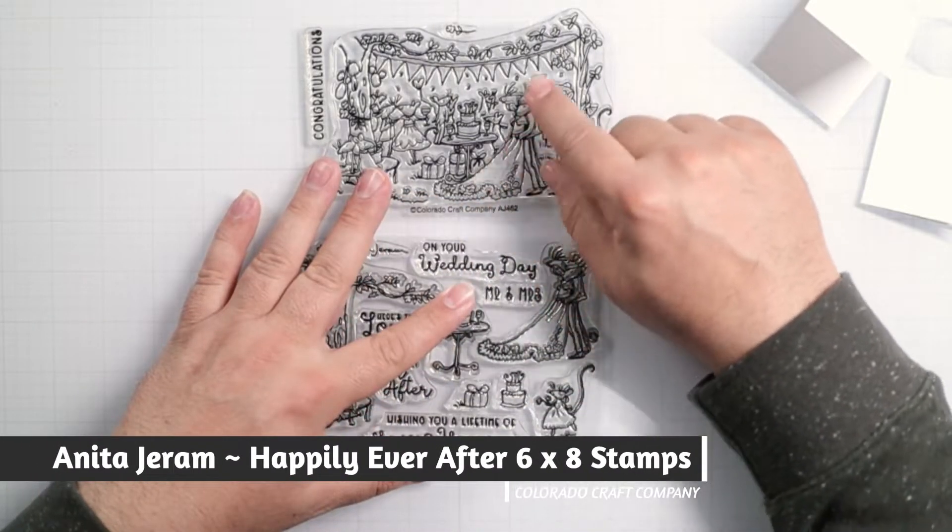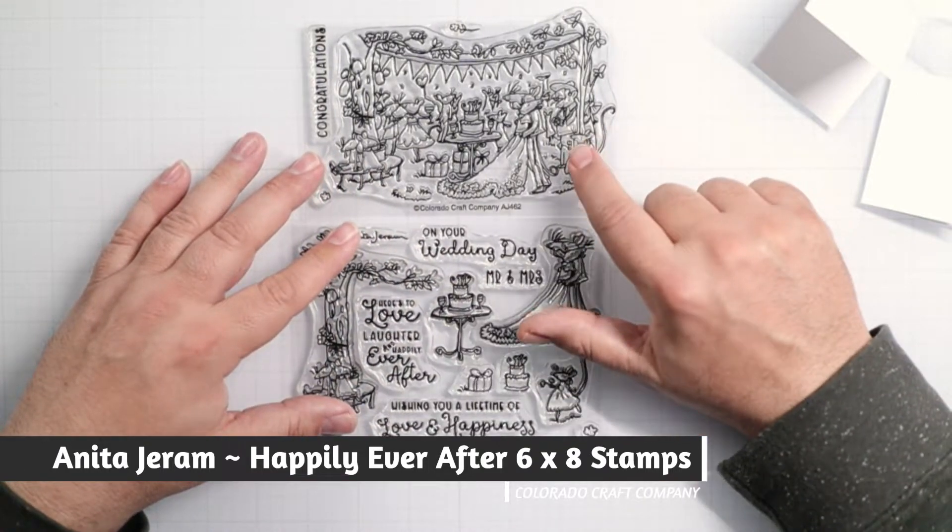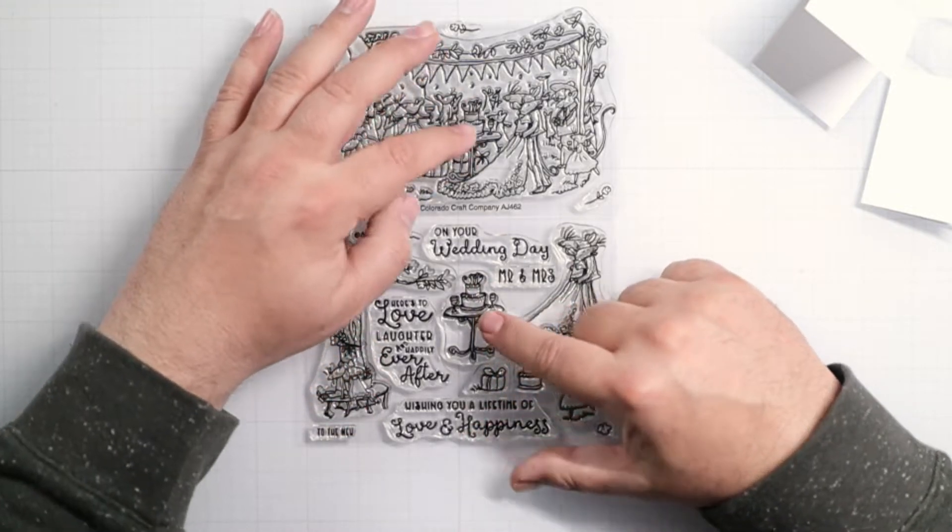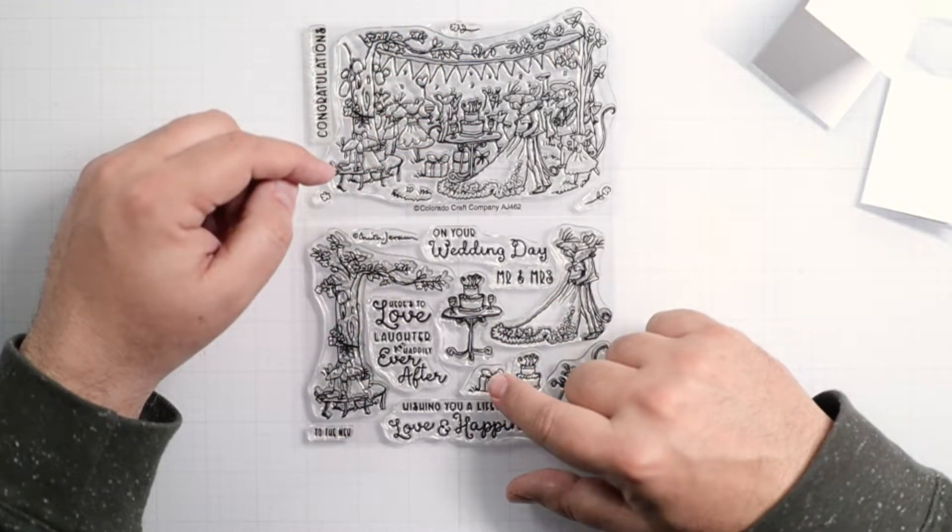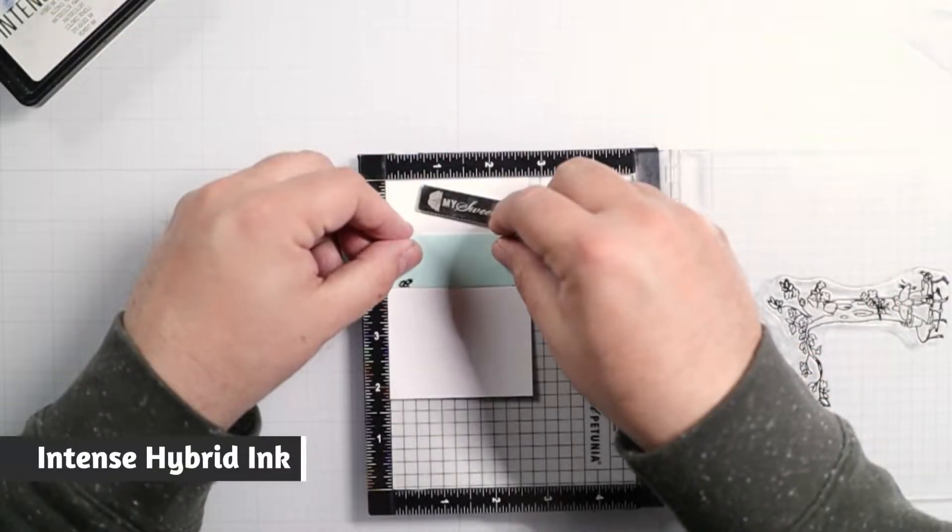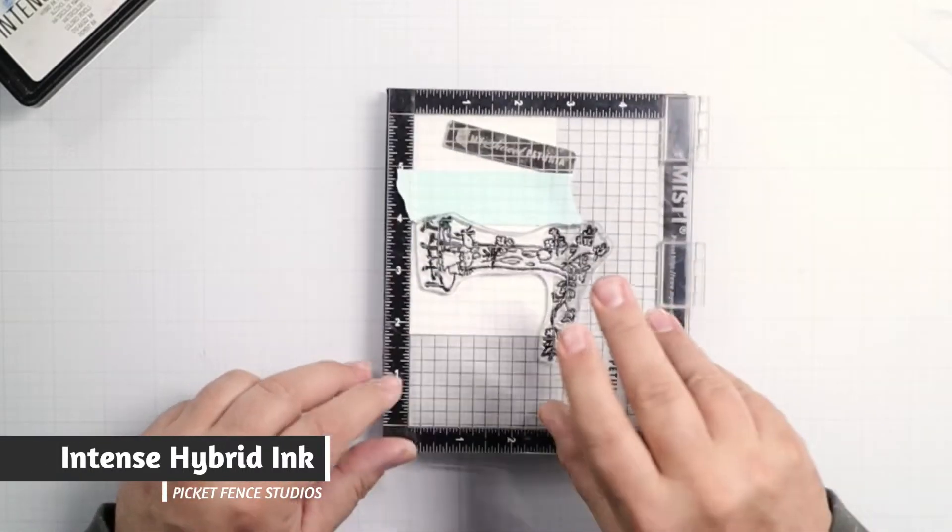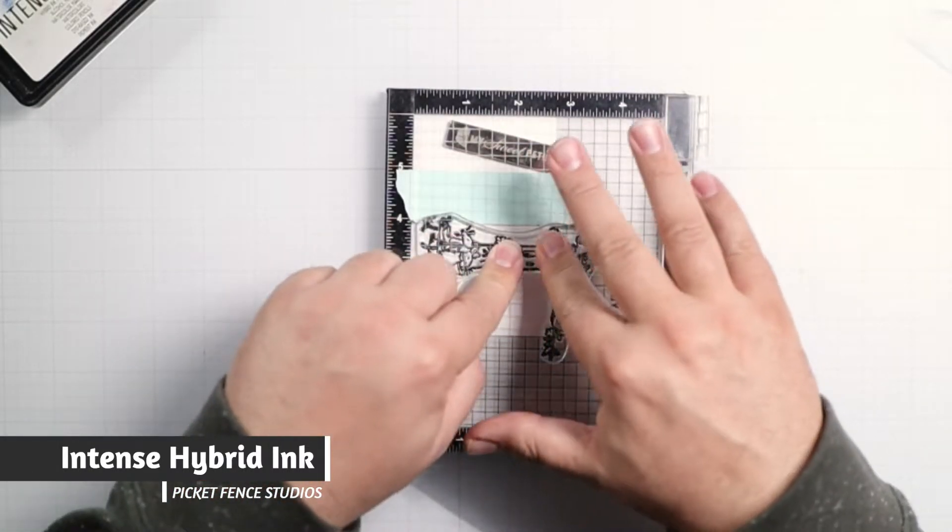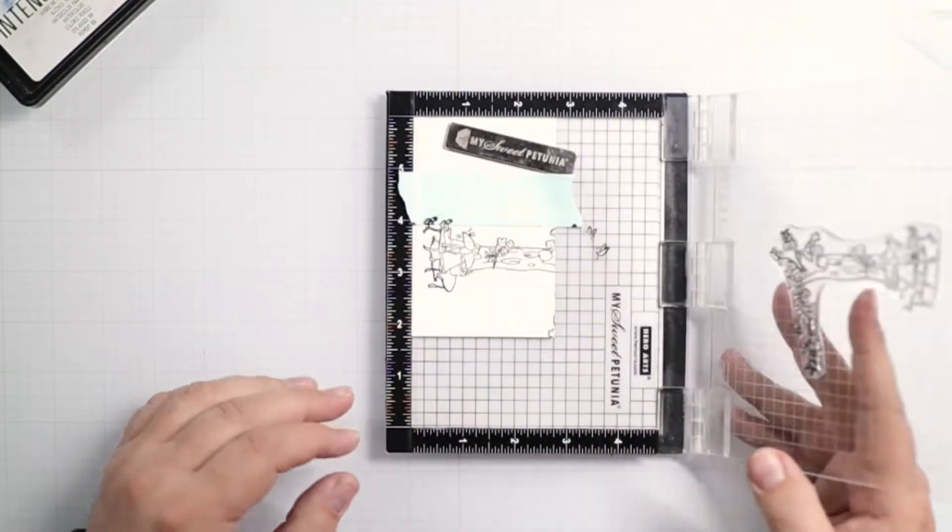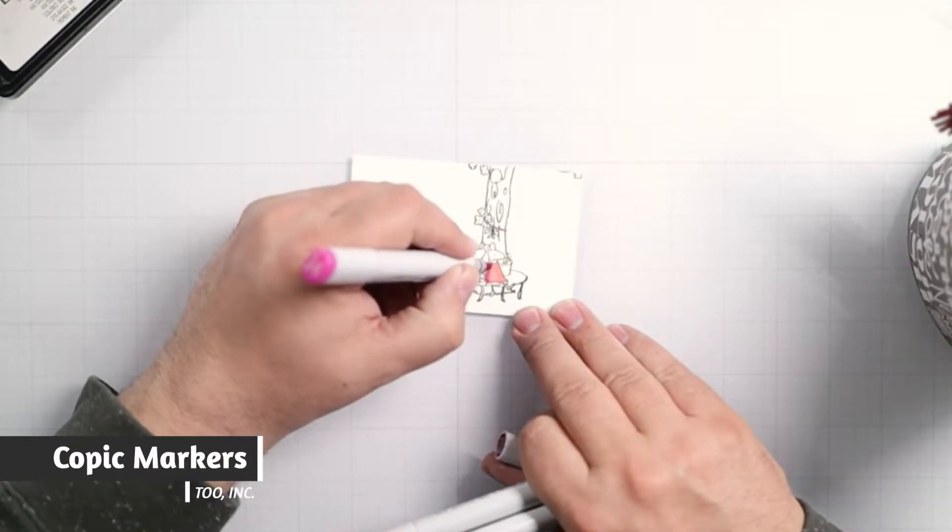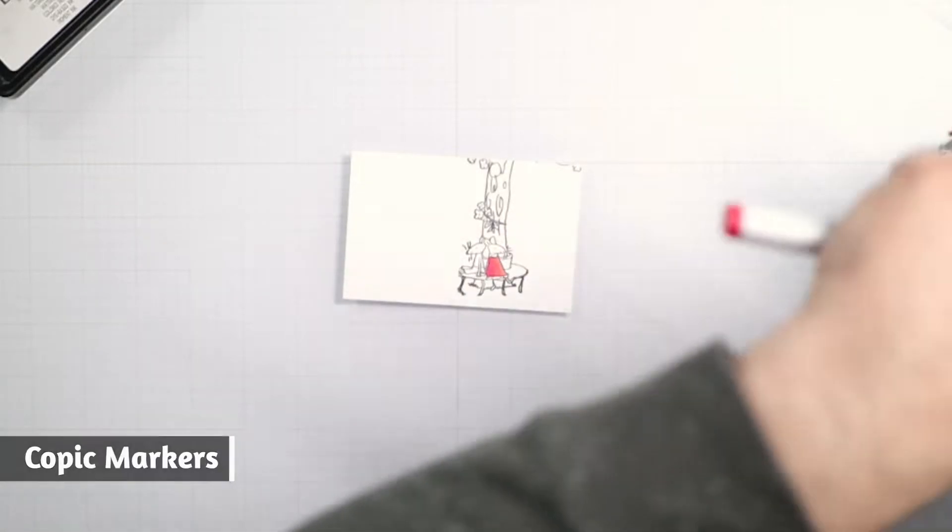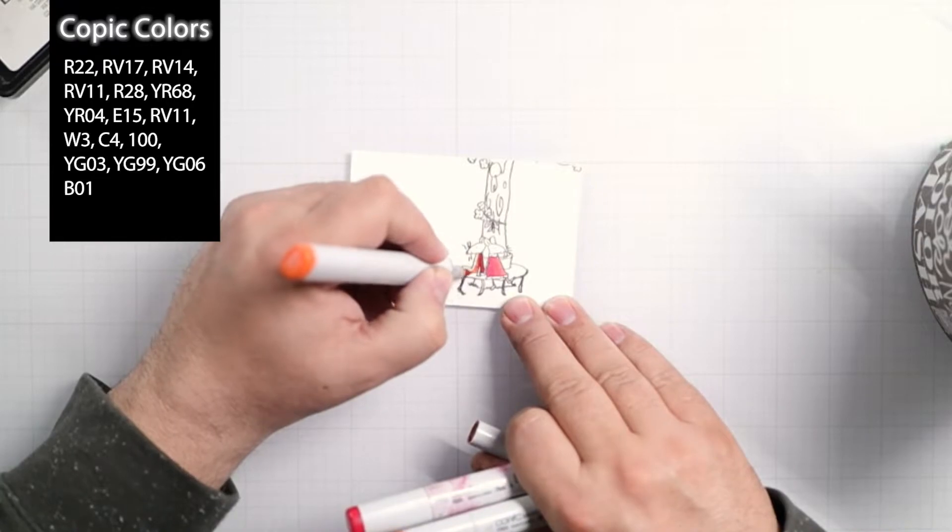We're going to feature the Anita Jerem Happily Ever After 6x8 stamps by Colorado Craft Company. For the whole weekend, I believe Saturday, Sunday, maybe even into Monday, these are going to be on sale from Colorado Craft Company. Just use my code that I'm going to have in the description box below and you'll get 15% off your entire order, plus this particular stamp set is going to be ten bucks.